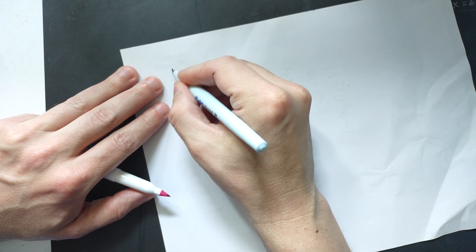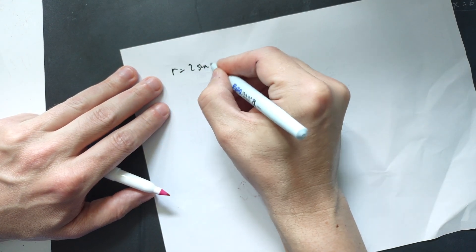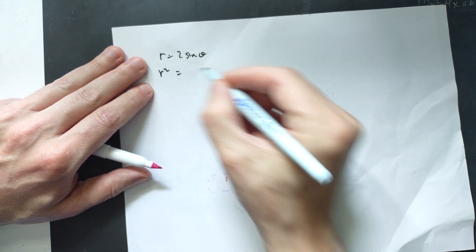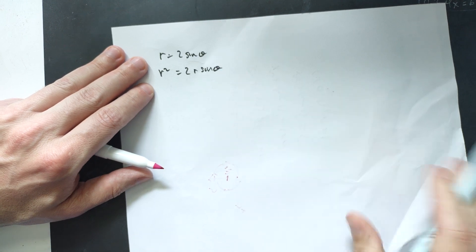Welcome friends, this is the graph R equals 2 sine theta right here. So multiply both sides by R, it's going to give you R squared equals 2R sine theta.